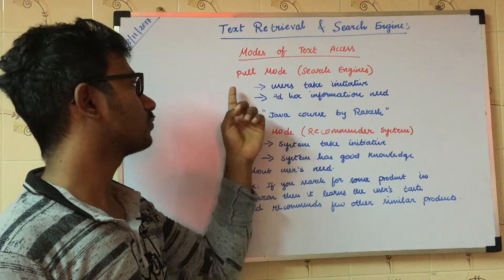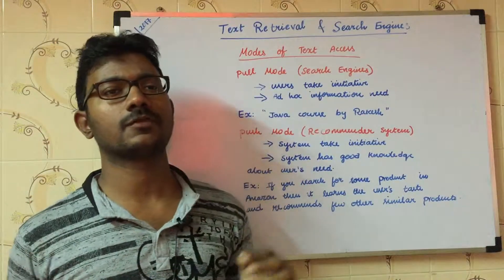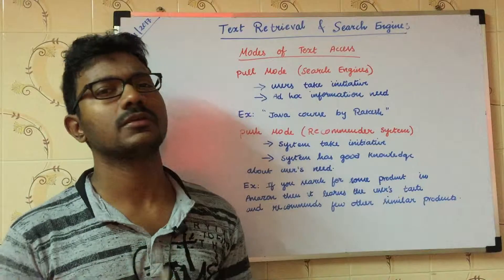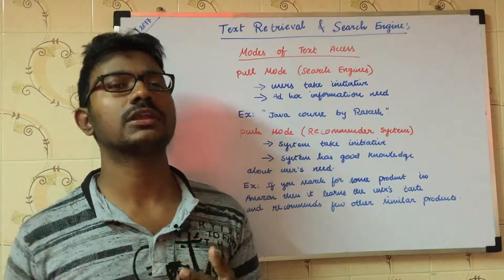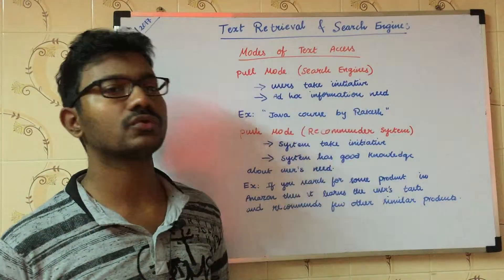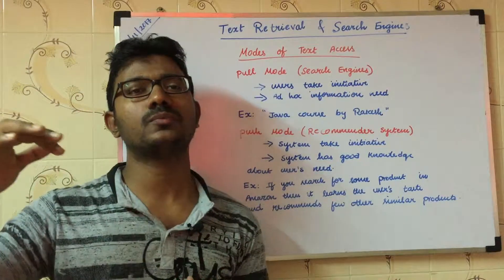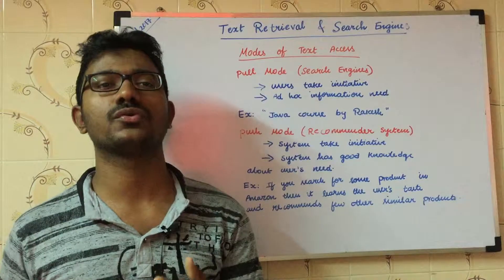So there are two types of modes: the first one is pull mode and the second one is push mode. For example, if you are trying to search 'Java course by Rakesh' in Google search, what the Google search engine does is it will try to understand the phrase, it will try to understand the keywords that were given by you, and then it will try to project the best results. Those results can be either videos,